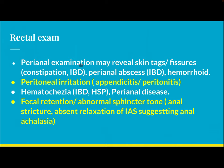Rectal exam: perianal examination may reveal skin tags, fissures in constipation and inflammatory bowel disease, perianal abscess in inflammatory bowel disease, and hemorrhoids. Peritoneal irritation in appendicitis and peritonitis. Hematochezia in inflammatory bowel disease and Henoch-Schönlein Purpura. Fecal retention, abnormal sphincter tone, anal stricture, and absent relaxation of the internal anal sphincter suggest anal achalasia.